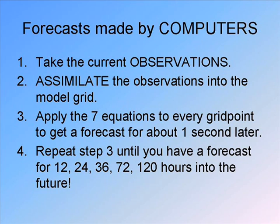Now you have at every grid point a new temperature, a new pressure, a new wind, a new humidity, etc. And you apply the seven primitive equations again. Now you have a forecast two time steps from now — if your time step is 10 seconds, then you're 20 seconds into the future. You just keep repeating this process, looping through thousands of times of repeating the application of those seven primitive equations to every grid point in the model.